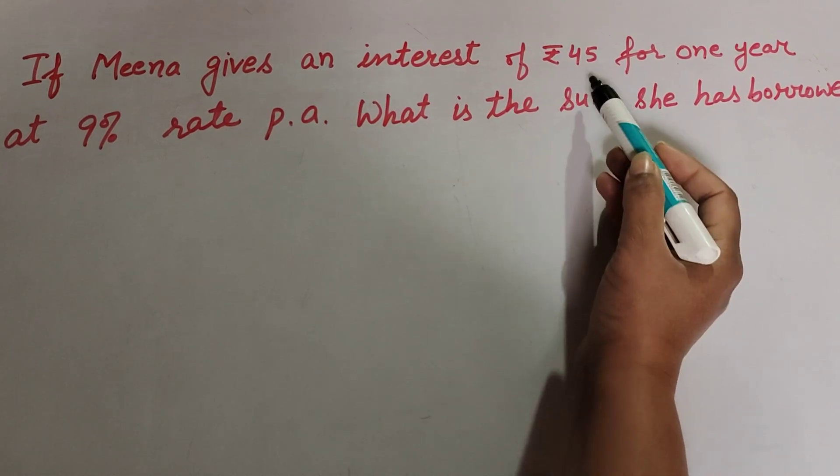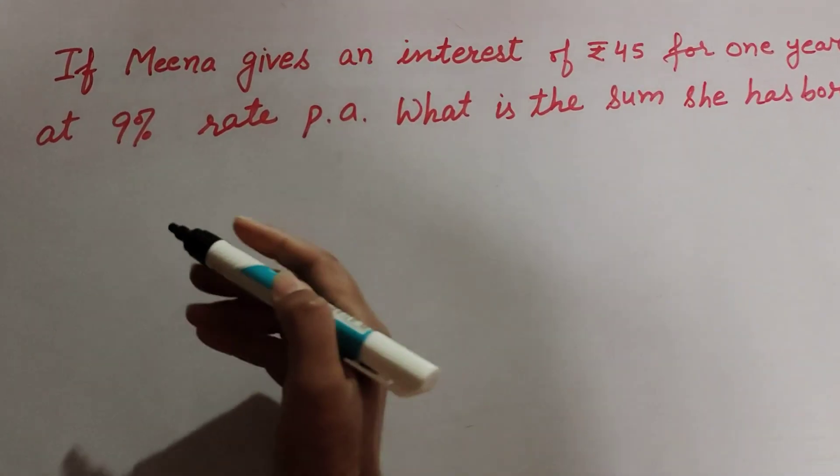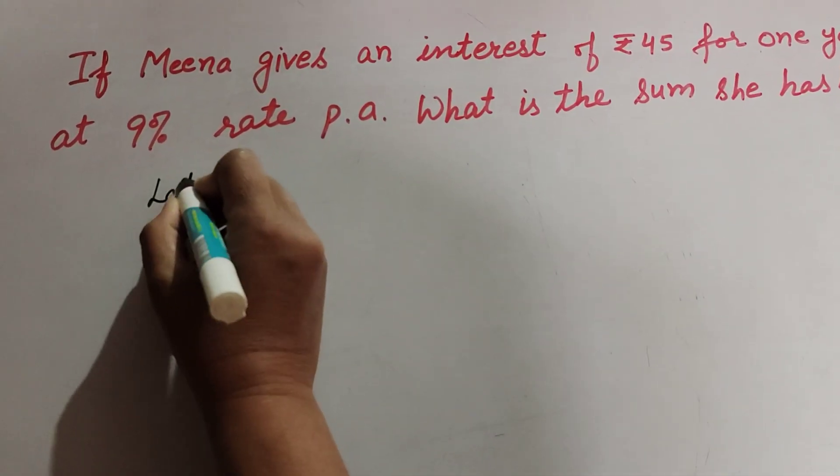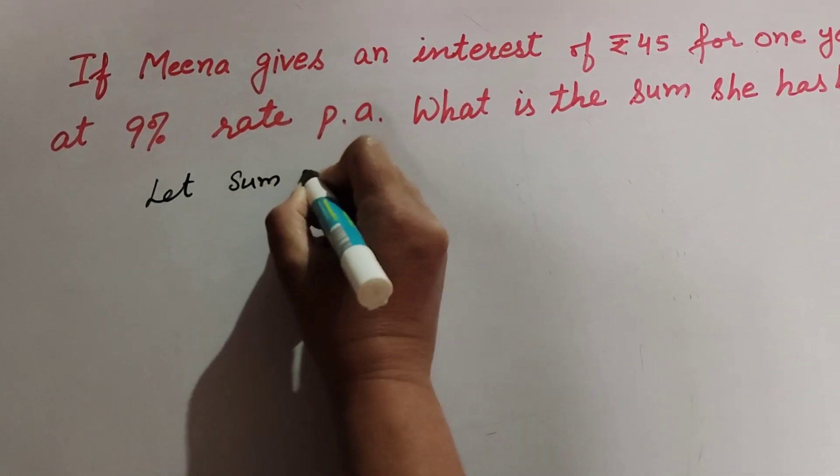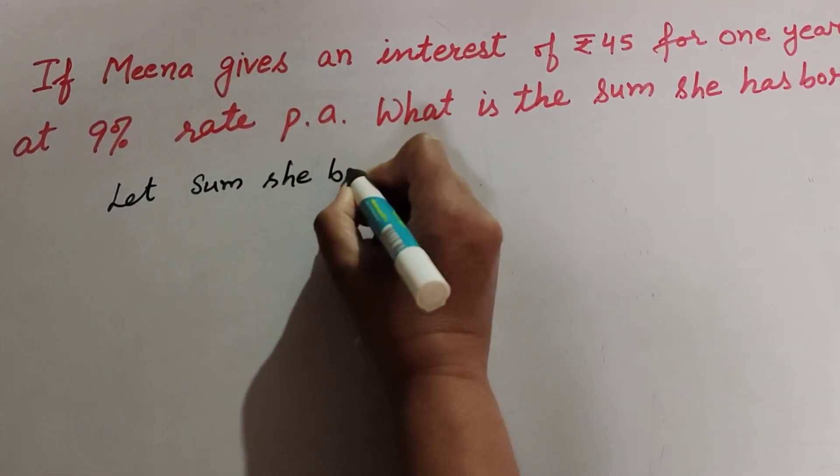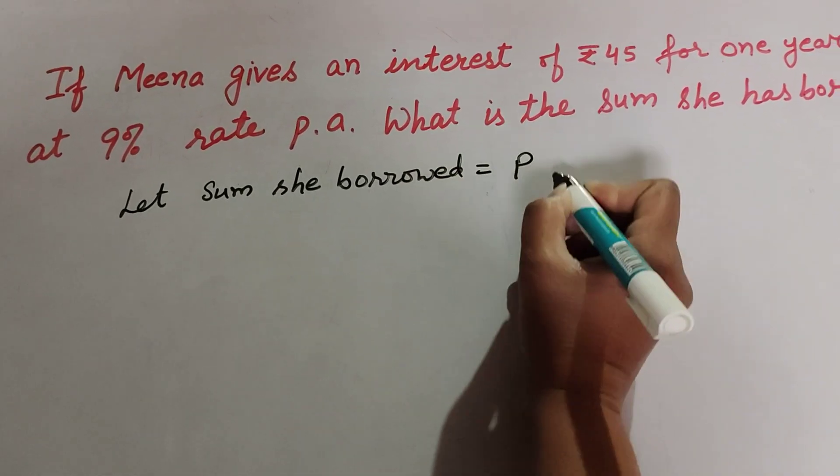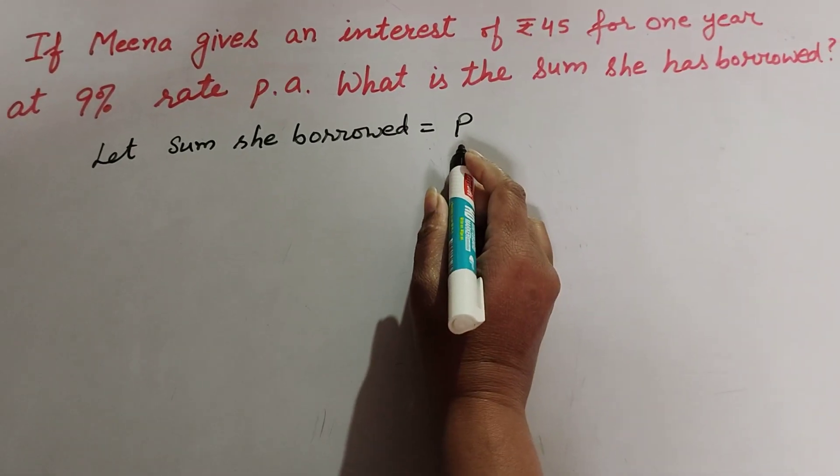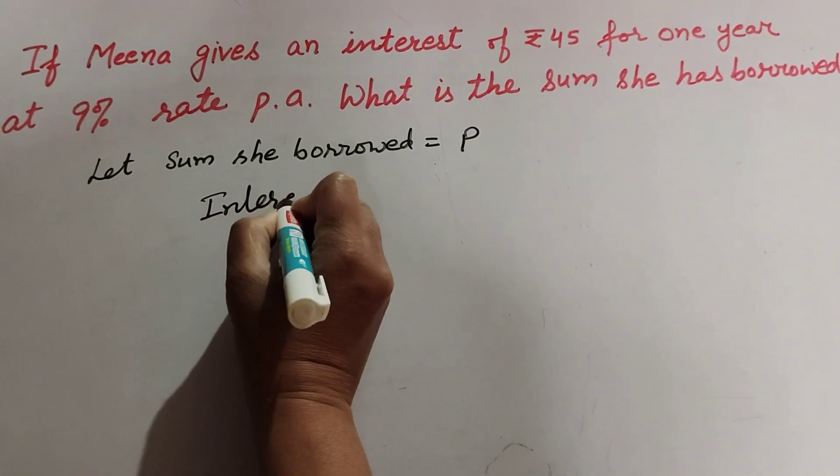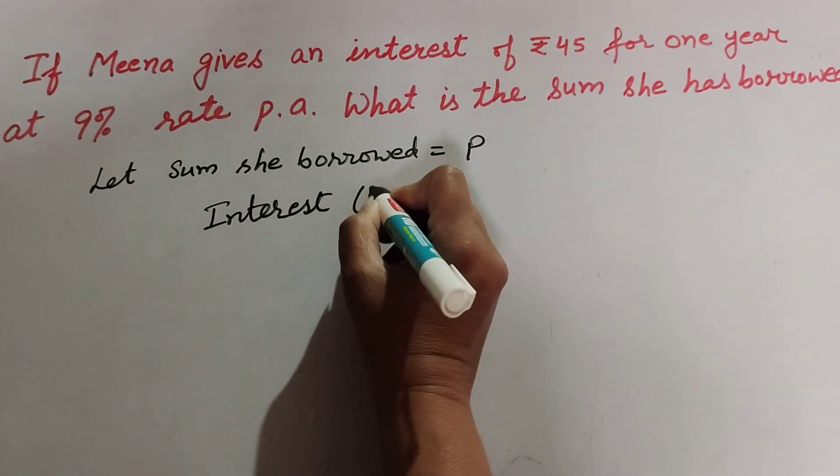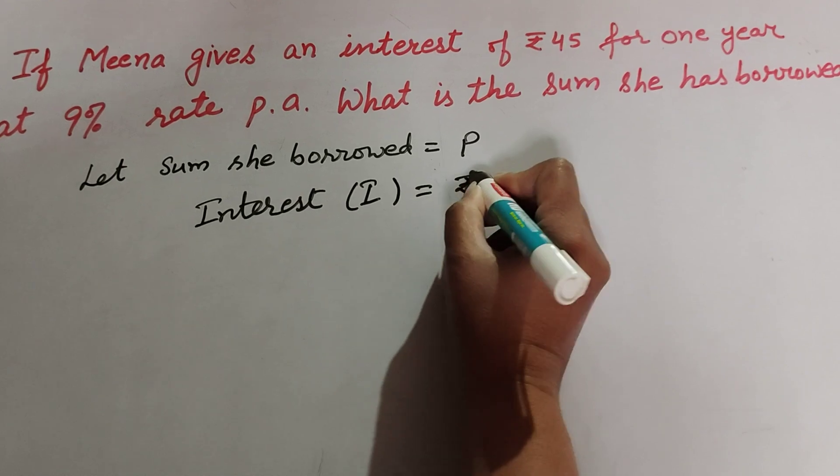find the principal that she borrowed and paid interest of ₹45. So let's suppose the sum she borrowed is P. She borrowed amount P, and the interest that she paid in one year is equal to ₹45.